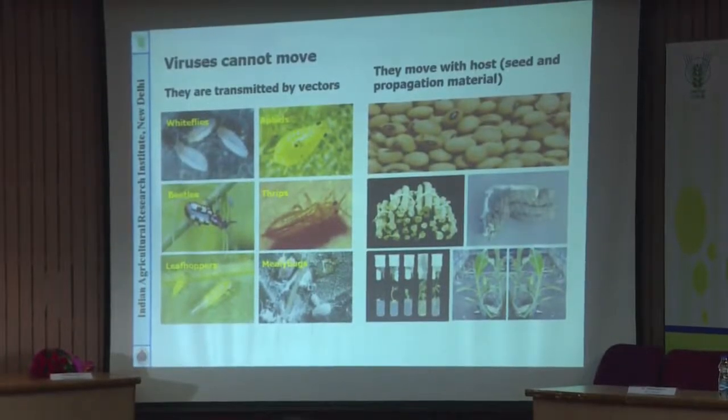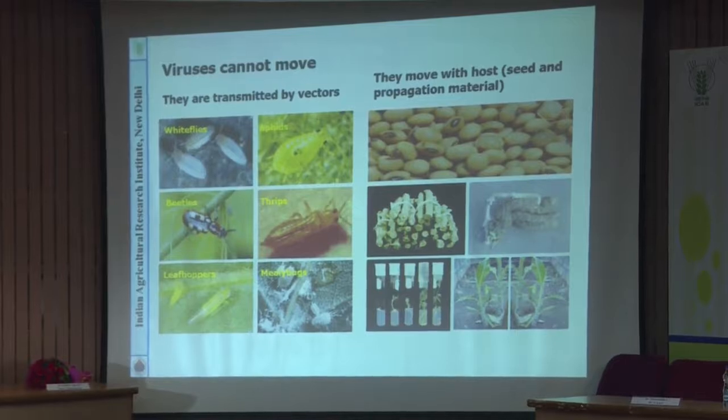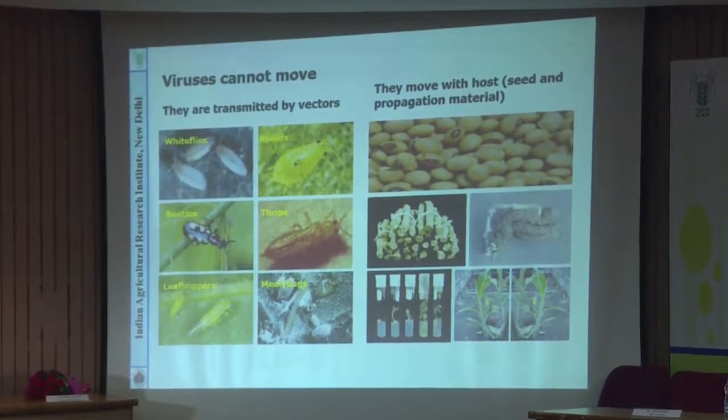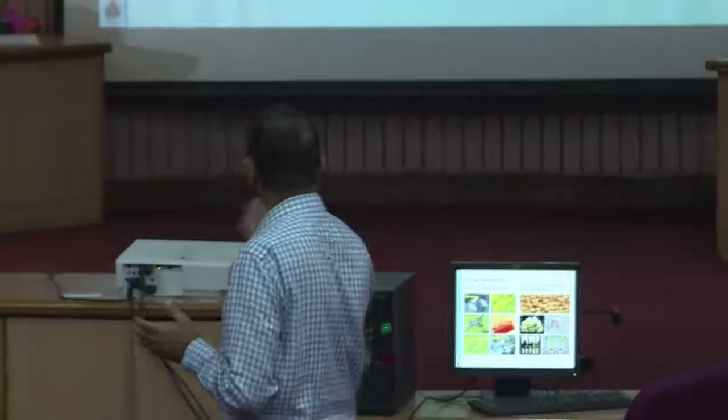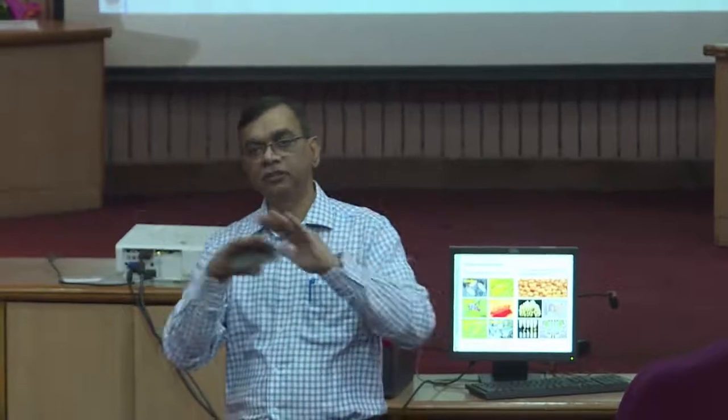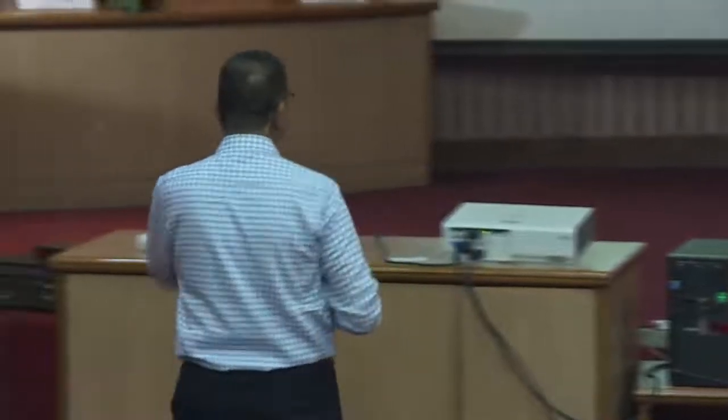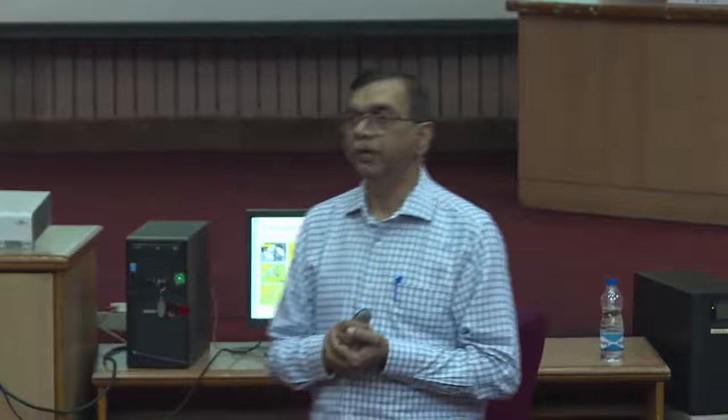In nature, viruses spread through insect vectors — most commonly aphids, whitefly, thrips, beetles, and so on. This is called horizontal transmission: when the virus moves from one plant to another. There is also vertical transmission, from the mother plant to the next generation, possible through seeds, sets, or tissue culture plants. These are the two basic types of virus transmission, and based on transmission, we develop management strategy.